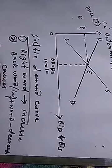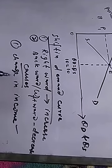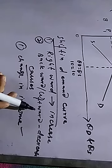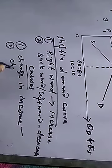The causes of a shift in the demand curve include: first, a change in income — an increase in income leads to an increase in demand and a rightward shift, while a decrease in income leads to a leftward shift showing decrease in demand. Second, a change in population — an increase in population leads to increase in demand and a rightward shift, while a decrease in population leads to a decrease in demand and a leftward shift.